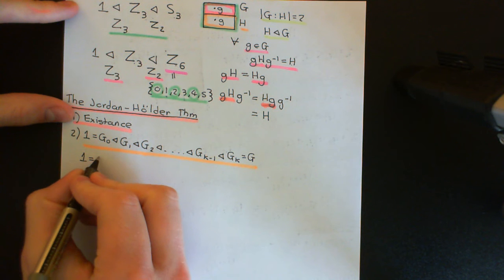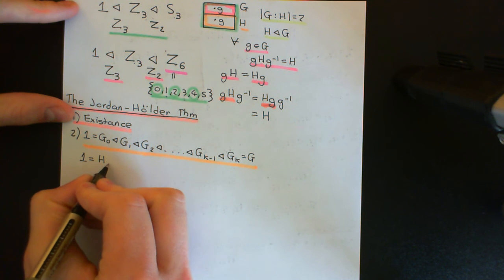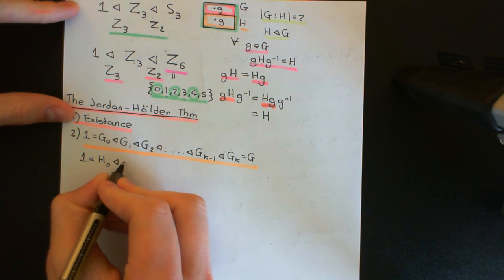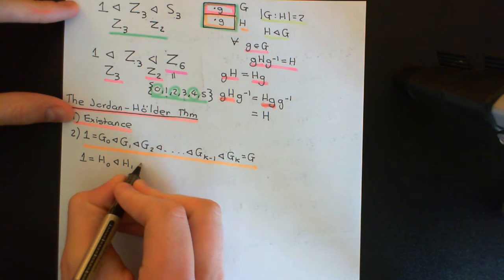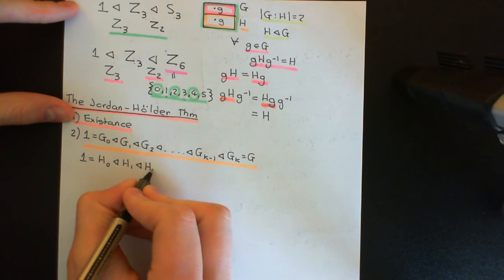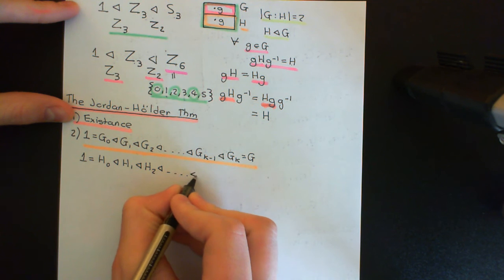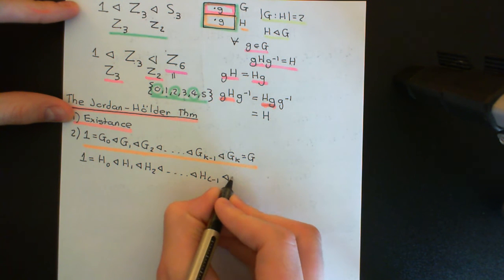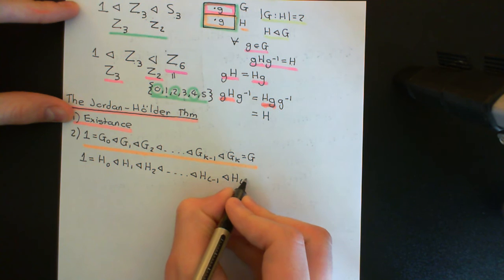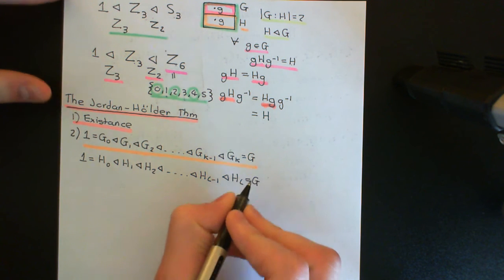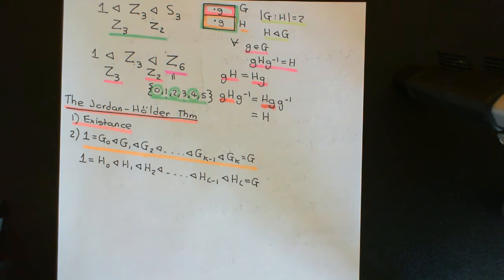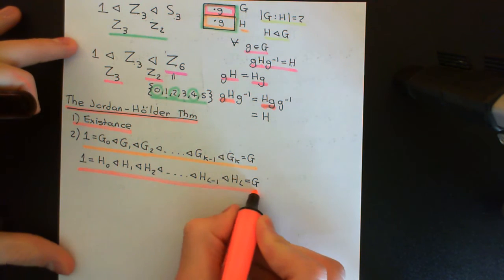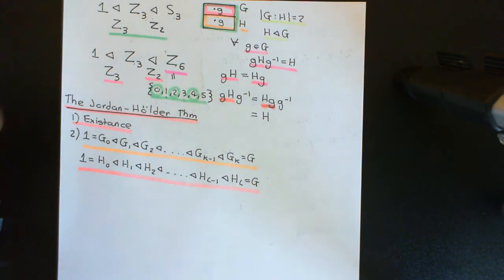So let's say we've got another composition series, notated in H's. We'll have H₀ representing the trivial subgroup, then H₁, H₂, all the way up to Hₗ₋₁, and then Hₗ, which will be equal to the improper subgroup, i.e. all of G. So here I have got two arbitrary composition series for my finite group, capital G.